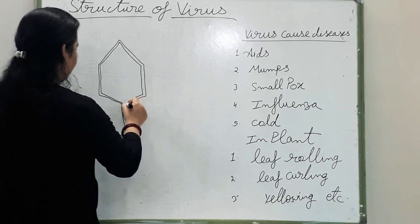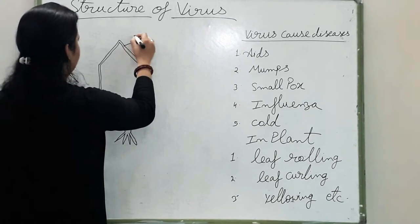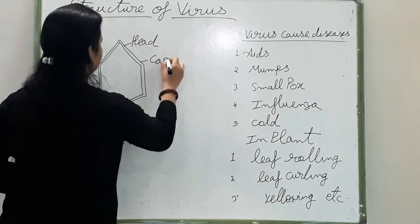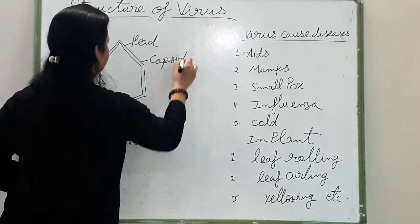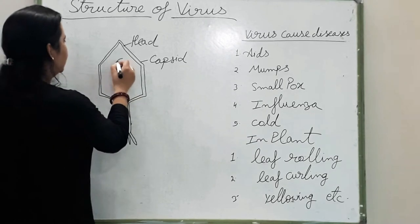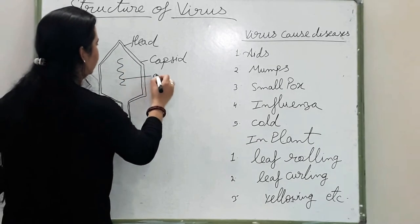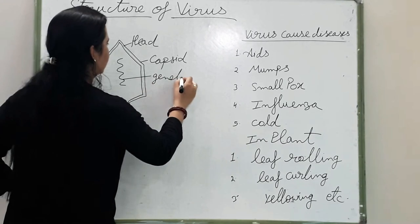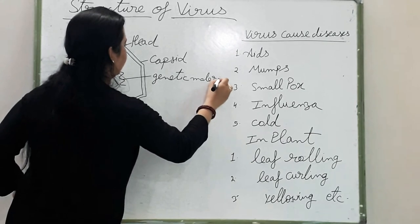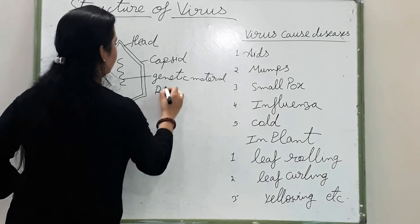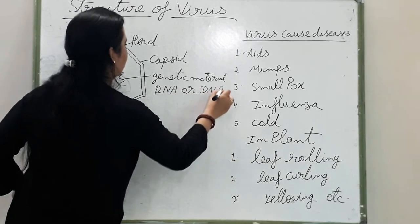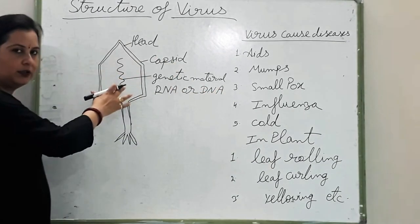I am making the head of the virus. This is the head — you can say capsid. Capsid yeh ek head hai, sar hai, avran hai, bar virus ka. Aur iske andar yeh paaya jata hai genetic material. This is the genetic material, jo RNA or DNA may se koye ek ho ga. Bahar waala jo cover hai, head hai.